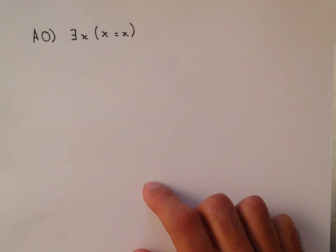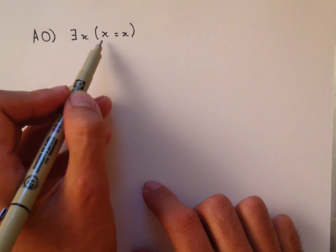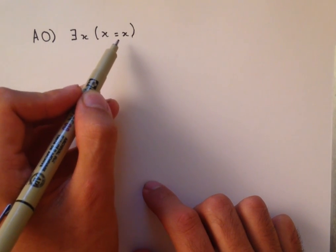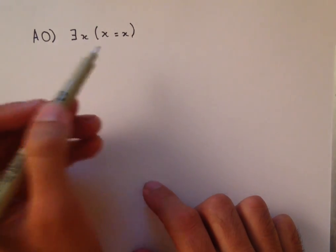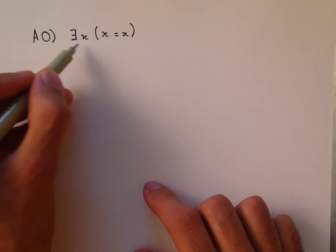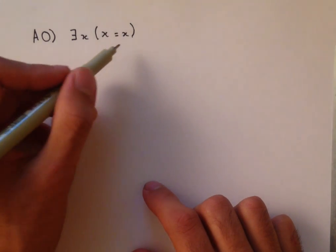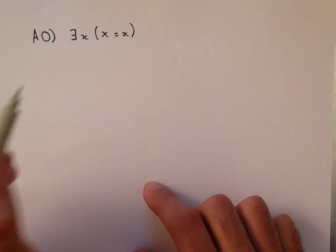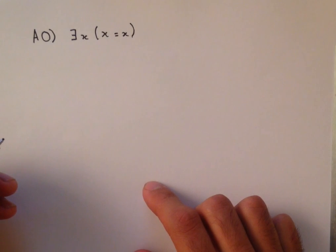So we're claiming that there exists some element x, and this x satisfies the condition x equals x. Now, if x were to exist at all, it would definitely satisfy this condition x equals x, because that's just the definition of equals. So really what's important here is that there exists x. The only reason we have this part in the parentheses is just to maintain the structure of the language.